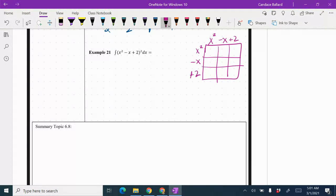I tend to use this area model or this box so I keep my work nice and organized and I don't miss any of my terms. So x times x, x squared times x squared is x to the fourth. x squared times negative x would be negative x cubed. x squared times 2 would be 2x squared.